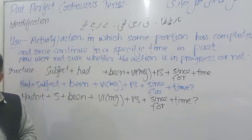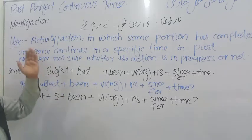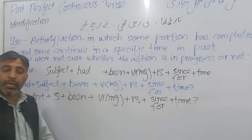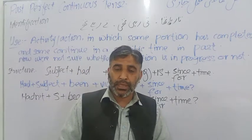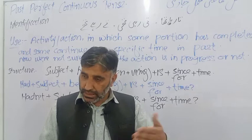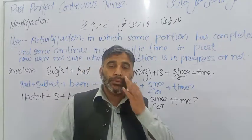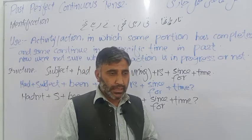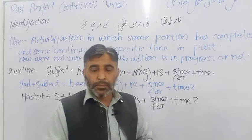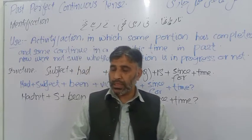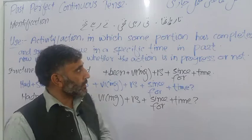Past means mazi, perfect means kuch hissah mukemmel ho chuka hai, and continuous means kuch hissah jari hai. Such an action or tense in which some portion has been completed in the past and some is continuing, and we are not sure whether the action is in progress or not. The use of this tense in our day to day conversation is less, not a lot, very less. But anyhow it's also a tense and we have to learn it.